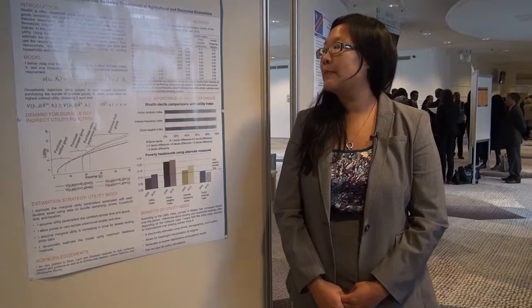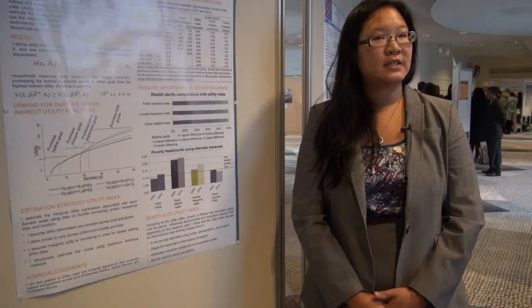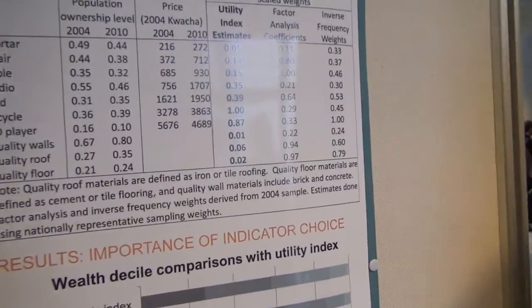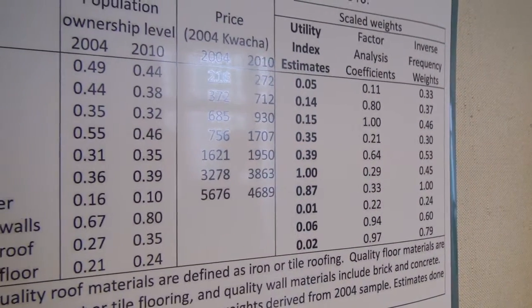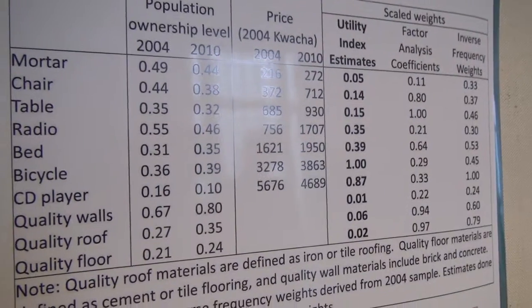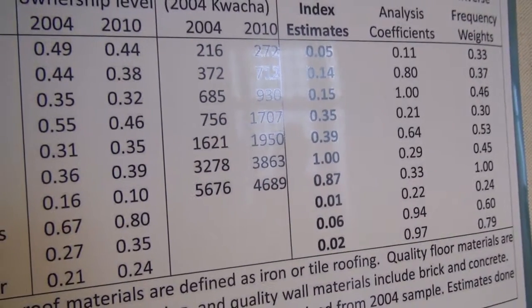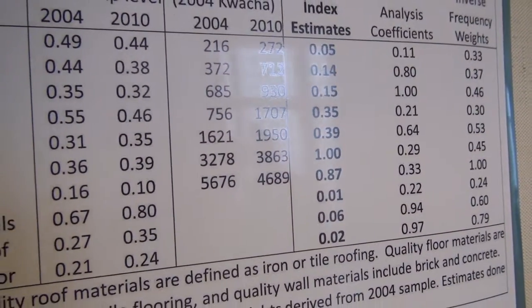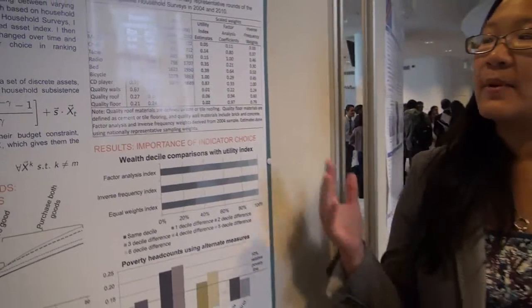In terms of housing quality, the marginal utilities are relatively low. The latter two columns show results from existing indices: factor analysis, which is very similar to principal components analysis and based on statistical estimation of weights, and the inverse frequency index, which weights goods by the inverse of population ownership level. The main finding is that the weights are very different depending on the method, and I argue my method offers an improvement because it is based on economic theory.